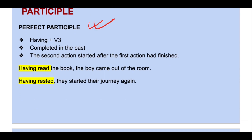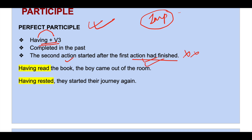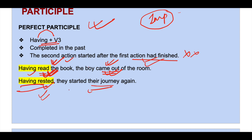Now let's understand perfect participle. Having plus V3 is perfect participle. It is used when the second action starts only after the first action has finished. For example: 'Having read the book, the boy came out of the room' — the boy came out only after finishing the book. Another example: 'Having rested, they started their journey again' — without rest, they wouldn't have started their journey.